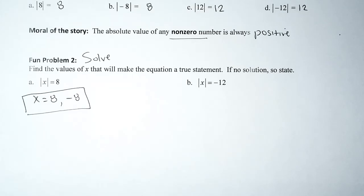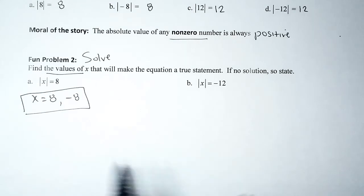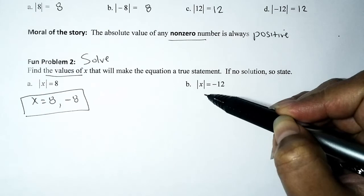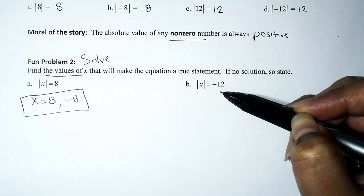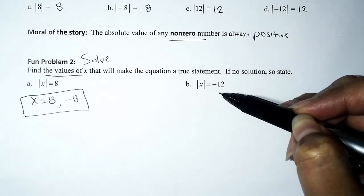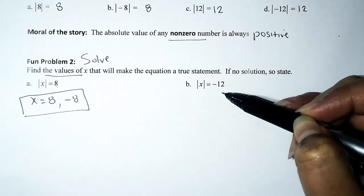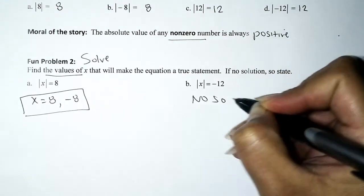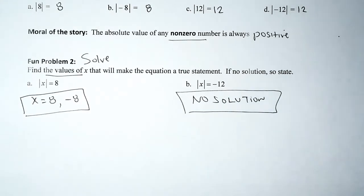Second equation: absolute value of x equals negative 12. We want to know what values of x make the equation true. I'm thinking: absolute value of what is negative 12? What number or numbers are negative 12 units away from 0 on the number line? But we have to remember — distance is non-negative, so the absolute value can never evaluate to a negative number. In this case, there is no solution.